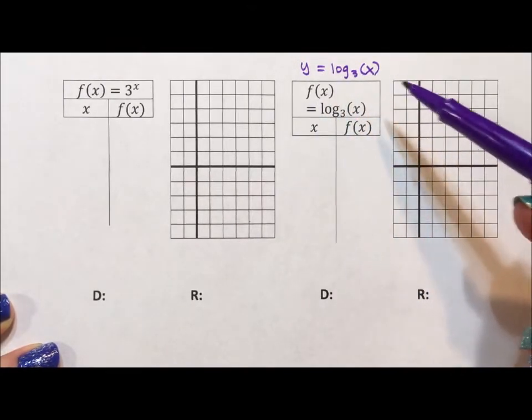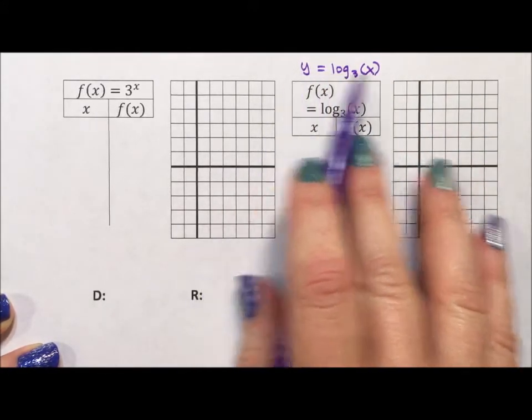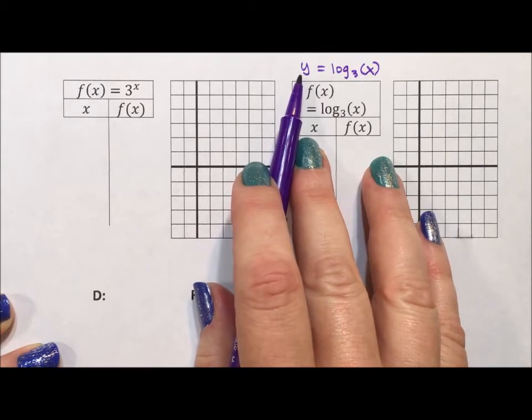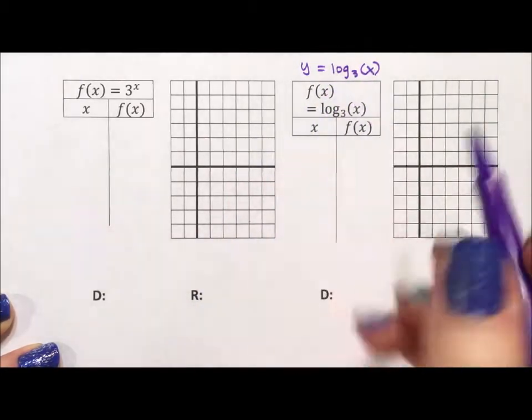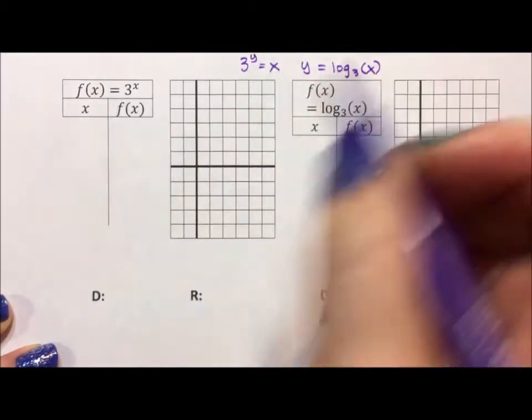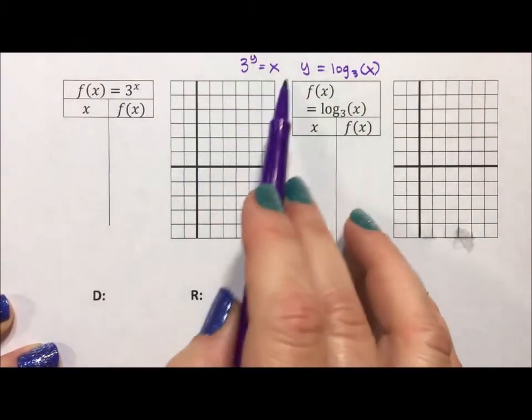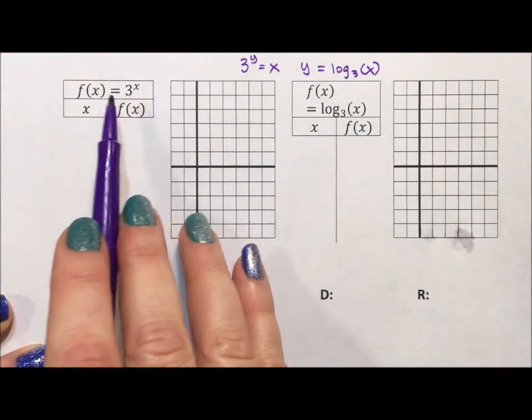Now, the inverse of log is an exponential. So remember, logs are exponents, which means in this equation, y is the exponent, and log answers the question 3 to what power is x. So 3 to the y equals x. So because this is the inverse, what I'm going to do is I'm going to start by graphing the inverse.